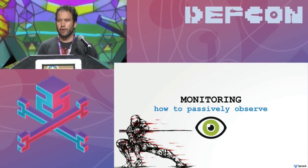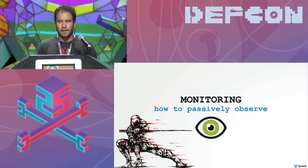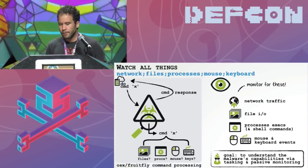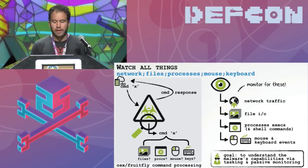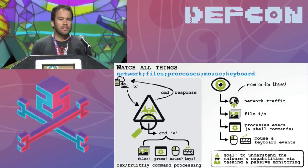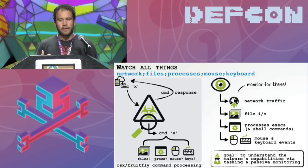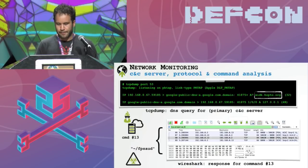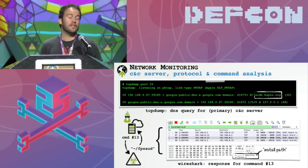Before we start building our custom command and control server, let's talk about how we can passively monitor the malware. This is important because if we task the malware but can't observe what it does — if it just sends us back a zero or a one — we've gained no insight into what that command actually did. So we want to monitor pretty much everything: a given command might create files, write files, spawn processes, execute shell commands, interact with the mouse and keyboard, or send interesting data back via the network. We should monitor for all these events so when we task the malware we can determine what it's doing.